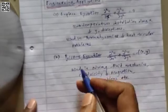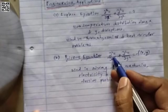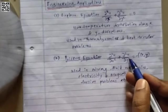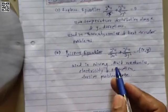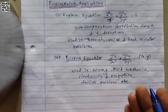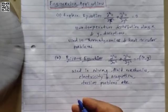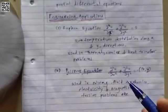Next is Poisson's equation: d²u/dx² + d²u/dy² = f(x,y). This equation is used in solving fluid mechanics problems, electricity and magnetism problems, and torsion problems in strength of materials. So Poisson's equation and Laplace equation are examples of partial differential equations.